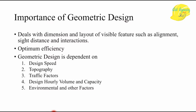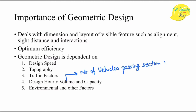The goal is to construct a road network that requires minimum cost and gives maximum output. Geometric design depends on several parameters: design speed, topography of the region, traffic factors, design hourly traffic volume, and traffic capacity. Traffic volume is the number of vehicles passing a section of road per unit time, as is traffic capacity.